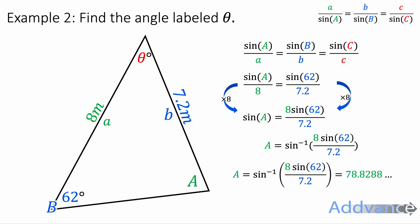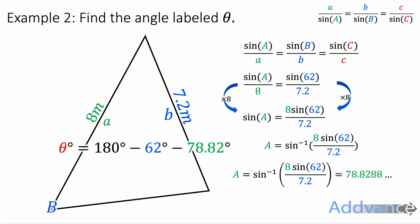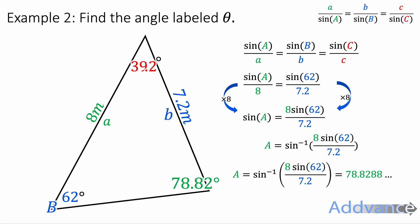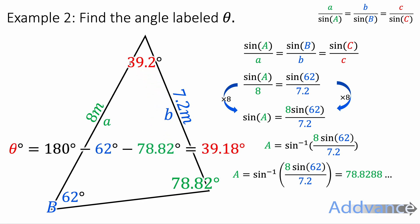Just make sure you can enter that into your calculator correctly. We can label this angle 78.82 degrees. We'll then subtract from 180: so 180 minus 62 minus 78.82 gives us our third missing angle, which is 39.18, or 39.2 degrees. And we've done — a very nice answer to that question.